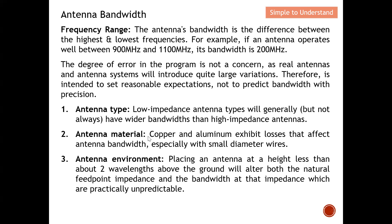Regarding the antenna environment — where we mount the antenna — placing an antenna at a height less than about two wavelengths above the ground will actually alter both the nature of the feed point impedance and the bandwidth, which are practically unpredictable. When you put the antenna very close to the ground, you alter the feed point impedance and bandwidth, and you may not be able to receive the signal. Hence, it's always important to place an antenna as high as possible to ensure line of sight and avoid distortion.